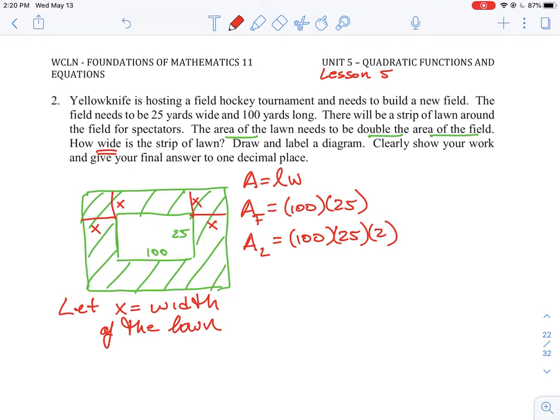All right, so then now what we need to do is how do we generate an equation here for all of this together? Well, what we know is we could say that we know what the total area is. We know the total area is going to be 2,500 for the field plus 5,000 for the lawn, which would give us 7,500 for the total area.